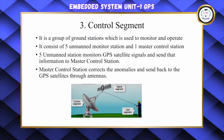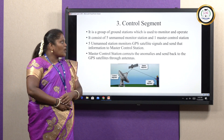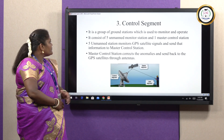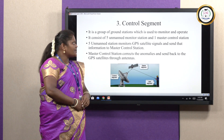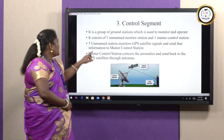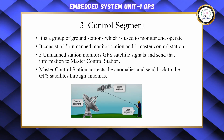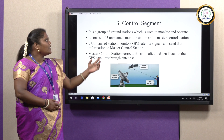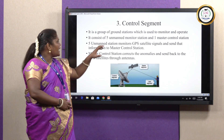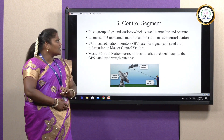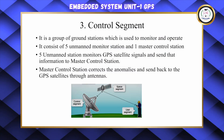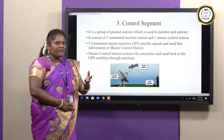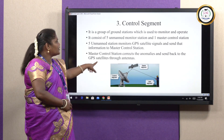The control segment is a group of ground stations used for monitoring and operating purposes. It consists of five unmanned monitoring stations and one master control station. The five unmanned stations monitor GPS satellite signals and send the information to the master control station, which corrects anomalies and sends corrections back to the GPS satellites through antennas.